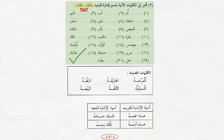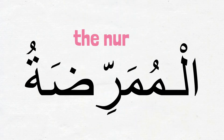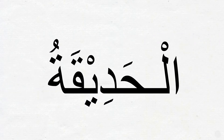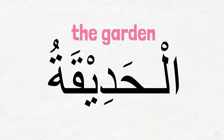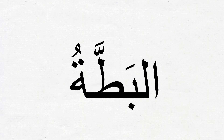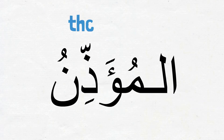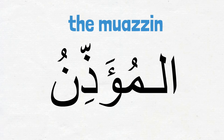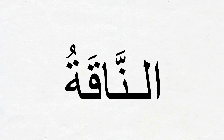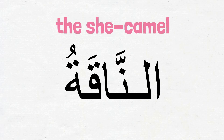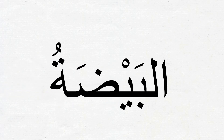We are done with this lesson. Next we have a list of new words. Let's go over them: اَلْمُمَرِّضَةُ — the nurse; اَلْحَدِيقَةُ — the garden; اَلْبَطَّةُ — the duck; اَلْمُؤَذِّنُ — the muezzin; اَلنَّاقَةُ — the she-camel; اَلْبَيْضَةُ — the egg.